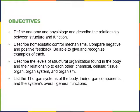Describe the levels of structural organization found in the body and their relationships to each other: chemical, cellular, tissue, organ, organ system, and organism. And list the 11 organ systems of the body, their organ components, and the system's overall general functions.